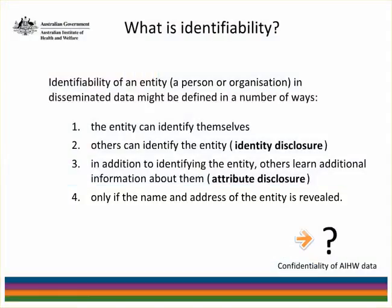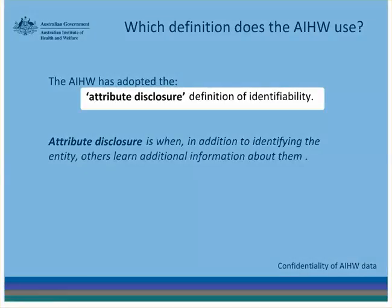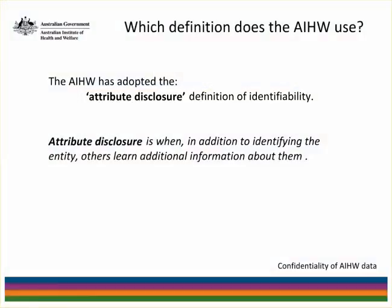So which definition has the Institute adopted? The Institute has adopted the attribute disclosure definition of identifiability. To recap, attribute disclosure is when, upon identifying an entity, you learn something you didn't know before. Let's have a look at an example that shows what we mean.